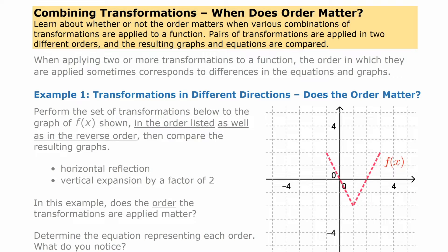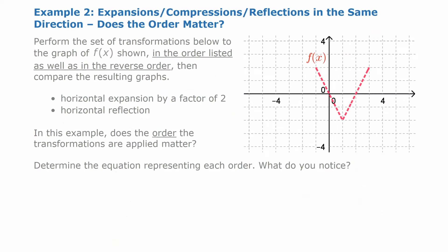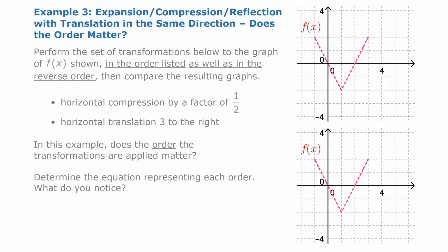The first thing we're going to look at is two transformations that are in different directions. Second, we're going to look at combining expansions, compressions, or reflections in the same direction. And third, we're going to look at combining an expansion, compression, or reflection with a translation in the same direction.